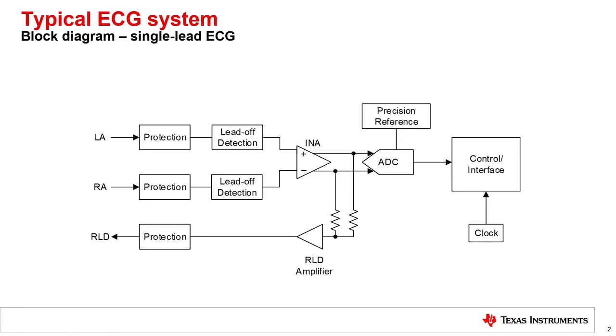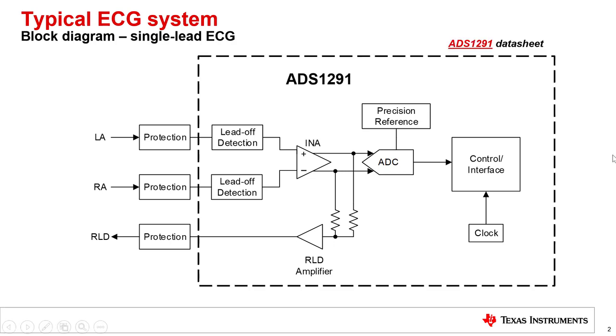Now that we understand the main functional blocks, let's jump back to our original diagram of a single lead ECG acquisition system. This is a pretty complicated diagram with a lot of different things for customers to consider, but TI actually offers a great solution that can simplify these systems. For example, a lot of the blocks fit nicely into our single channel ADS1291, as you can see here.